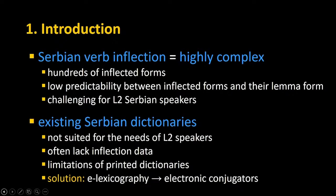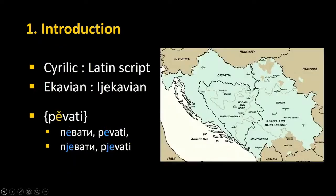The solution can be found in electronic lexicography, mostly in electronic conjugators. Before I start, I would like to say something about Serbian. It's an official language spoken in Serbia and by Serbs in Montenegro, Bosnia-Herzegovina, and a Serbian minority in Croatia. It can be written in Cyrillic and Latin script — both are used — and there is also the Ekavian and Ijekavian variety, due to the reflex of the historic sound 'yat', which for example gave 'e' and 'ije' in Serbian.